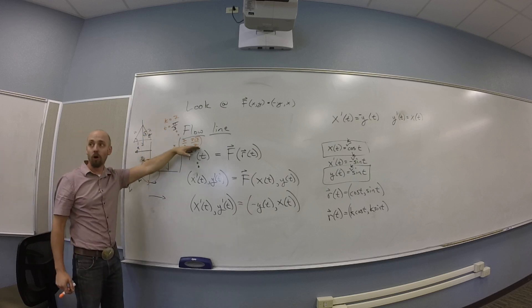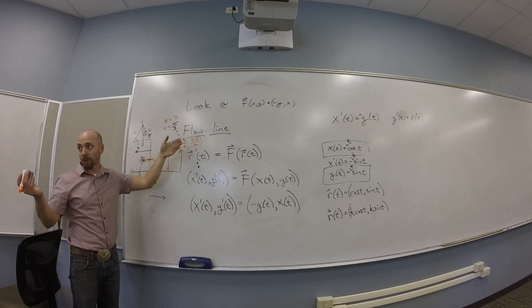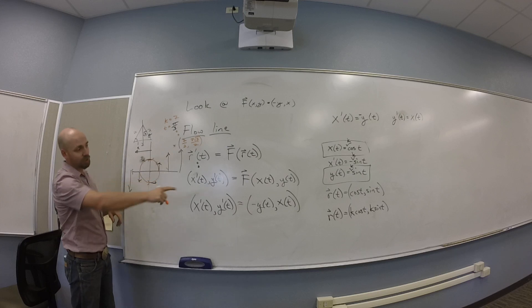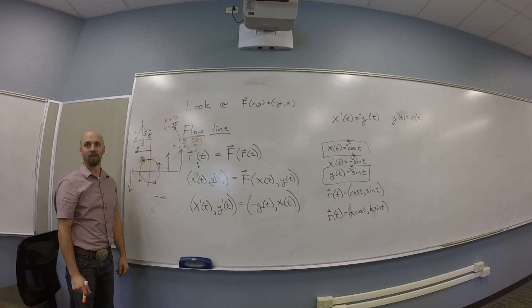And so the flow for my little fish food is 7 cos t comma 7 sine t. You guys all see that?